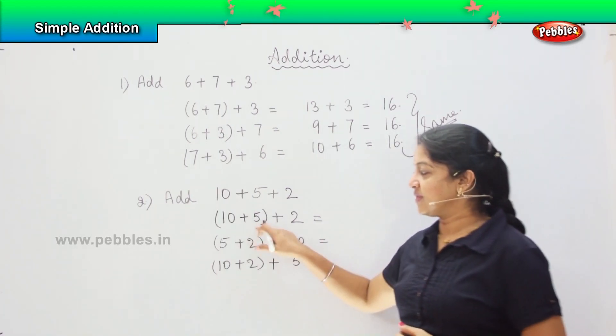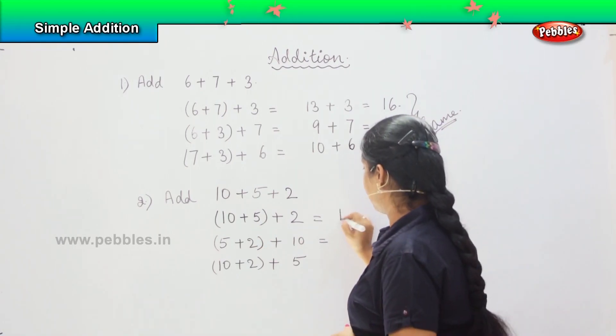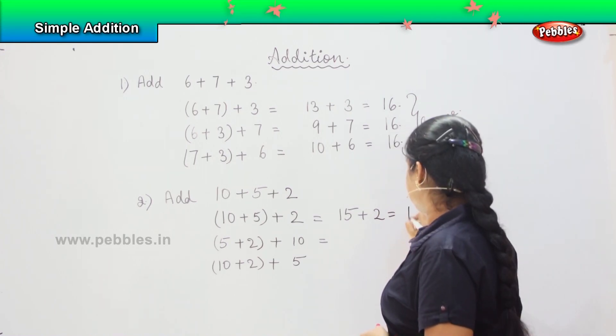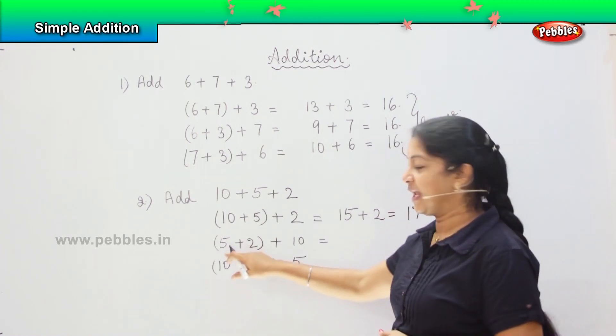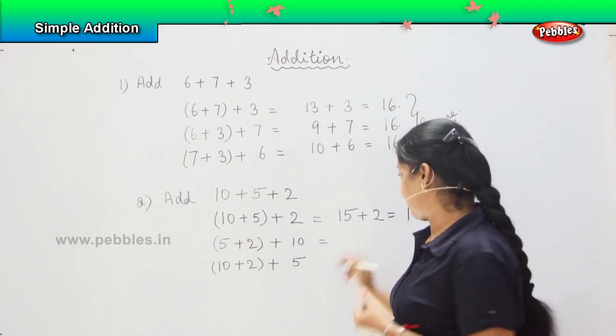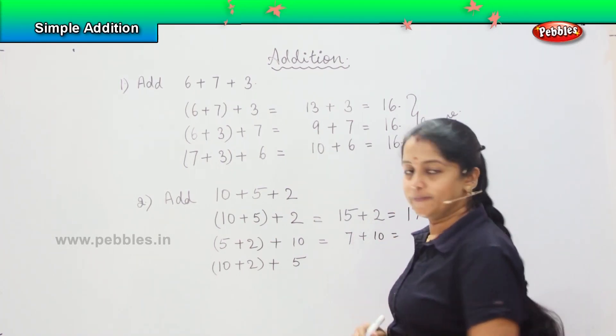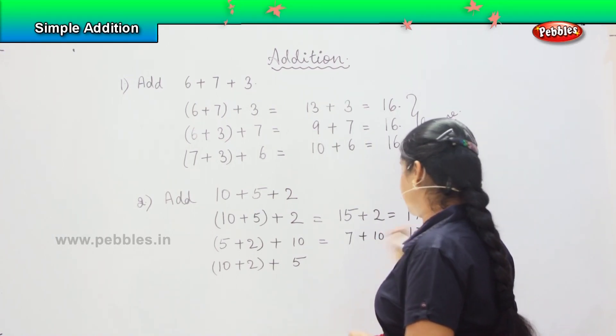Right. So 10 plus 5 is how much? It's 15. 15 plus 2 is how much? 17. Next, 5 plus 2: 6, 7. Right. So 7 plus 10, how much is it? Good, it is 17.